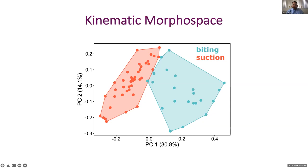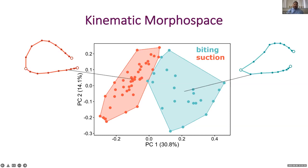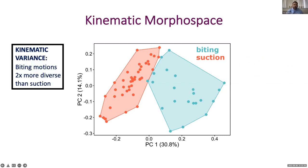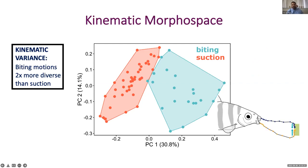Here's a PC plot of aligned trajectory shapes — one of the things I want to point out is much more repeatability and similarity across suction-based strikes and relative messiness in the biting motions. Another way to show this variation is in a kinematic morphospace, where each point is the shape of a different trajectory or a different kinematic pattern. We see a clear separation between the biting and suction-based motions. In the biting strike there's an abrupt shift in the direction of shape change following peak gape — where the fish makes contact with the substrate — but a smoother transition between opening and closing phases for suction feeding. There's over two times greater variance in biting motions compared with suction.